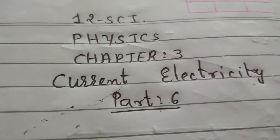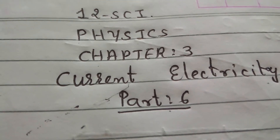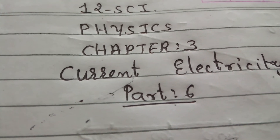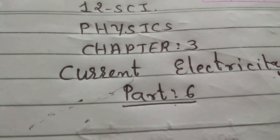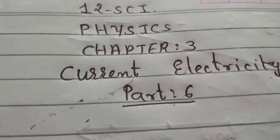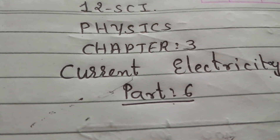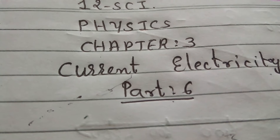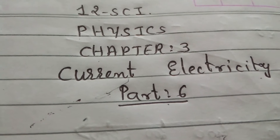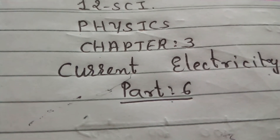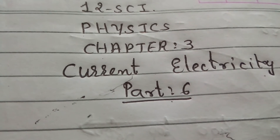Hello students. In last session we discussed about the relation between temperature and resistivity. For a conductor, resistivity increases due to increasing temperature. In case of alloys, resistivity does not depend on temperature — or in other words, there is a weaker dependence of resistivity with temperature. And in case of semiconductors, if temperature increases, then resistivity decreases.